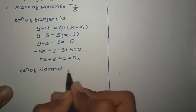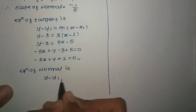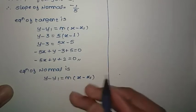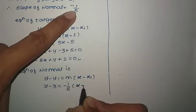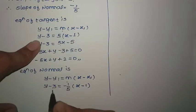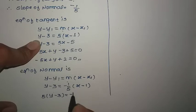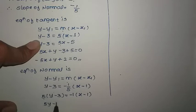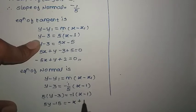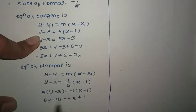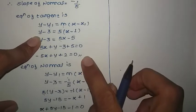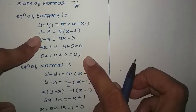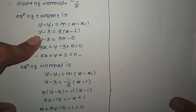Now we find the equation of normal using the same formula y minus y1 = m(x minus x1), but with slope of normal m = -1/5 and point (1,3). So y minus 3 = -1/5 times (x minus 1). Cross multiplying by 5: 5y minus 15 = -(x minus 1), giving 5y minus 15 = -x + 1. Taking all terms to one side: x plus 5y minus 16 equals 0 — this is the equation of normal.